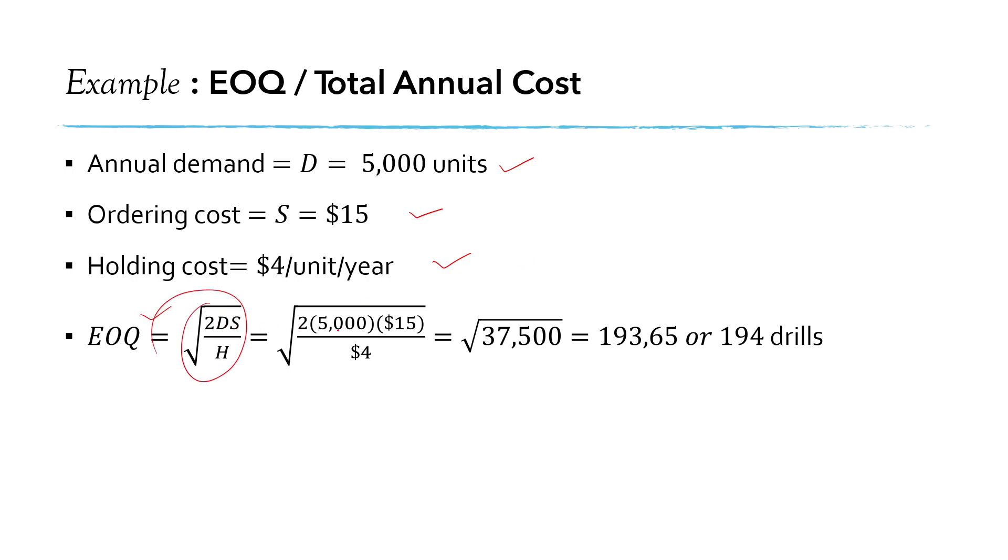This is the EOQ formula. We plug in the values for demand, ordering cost and holding cost, and we have the EOQ value equals to 194 drills.